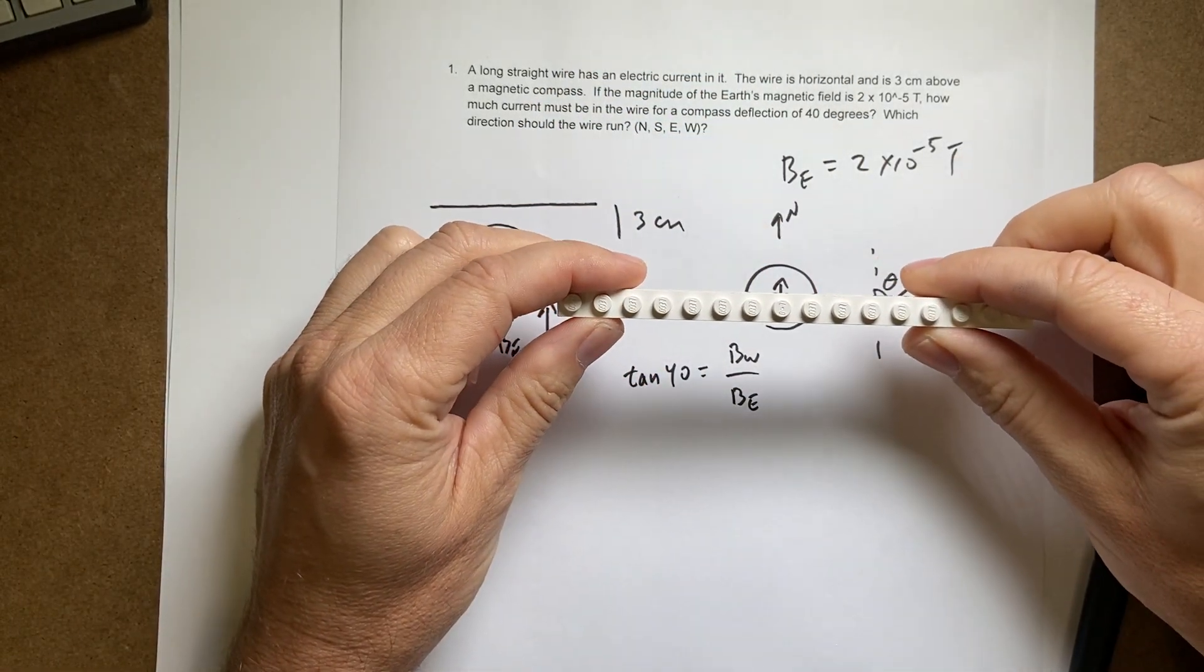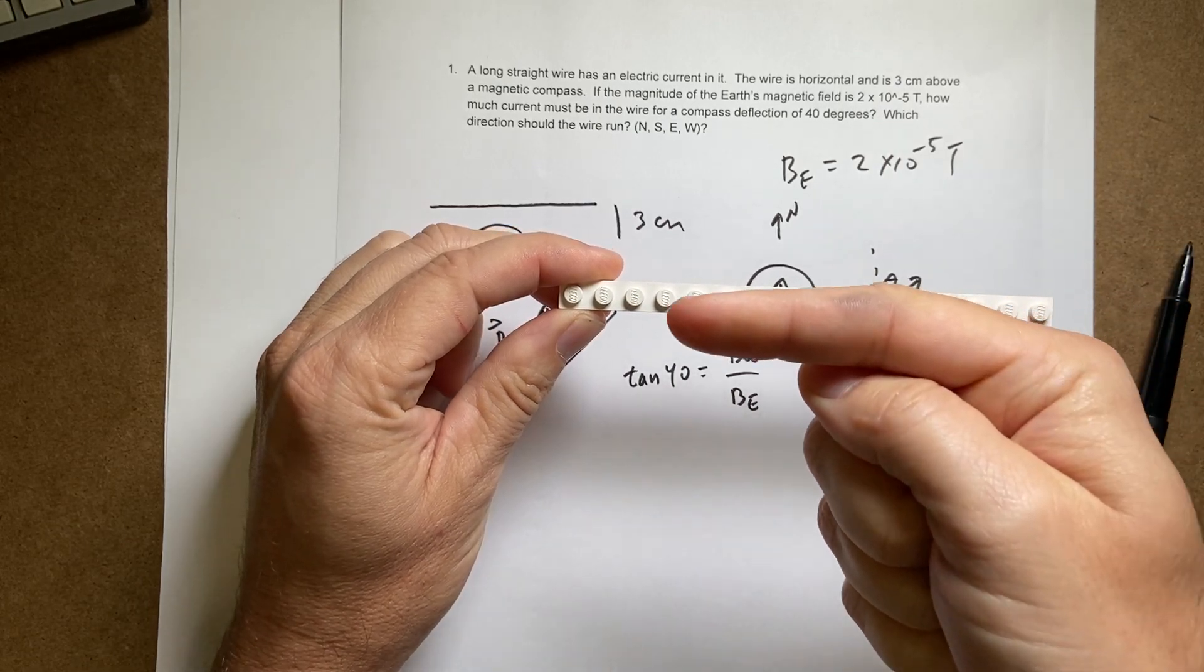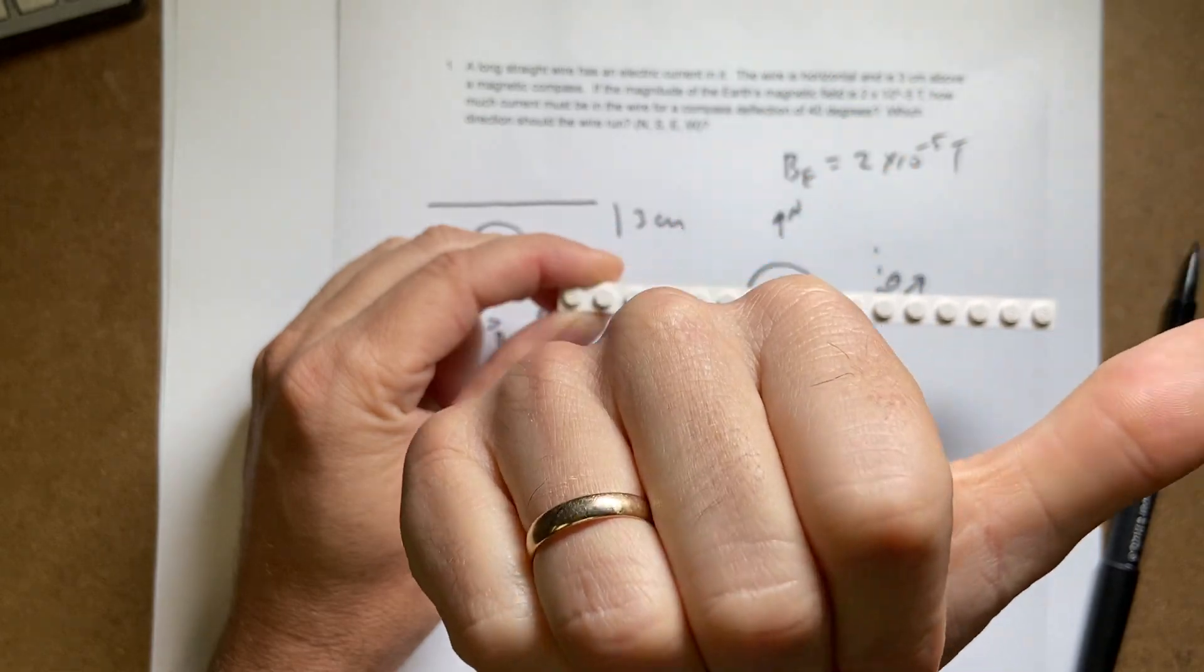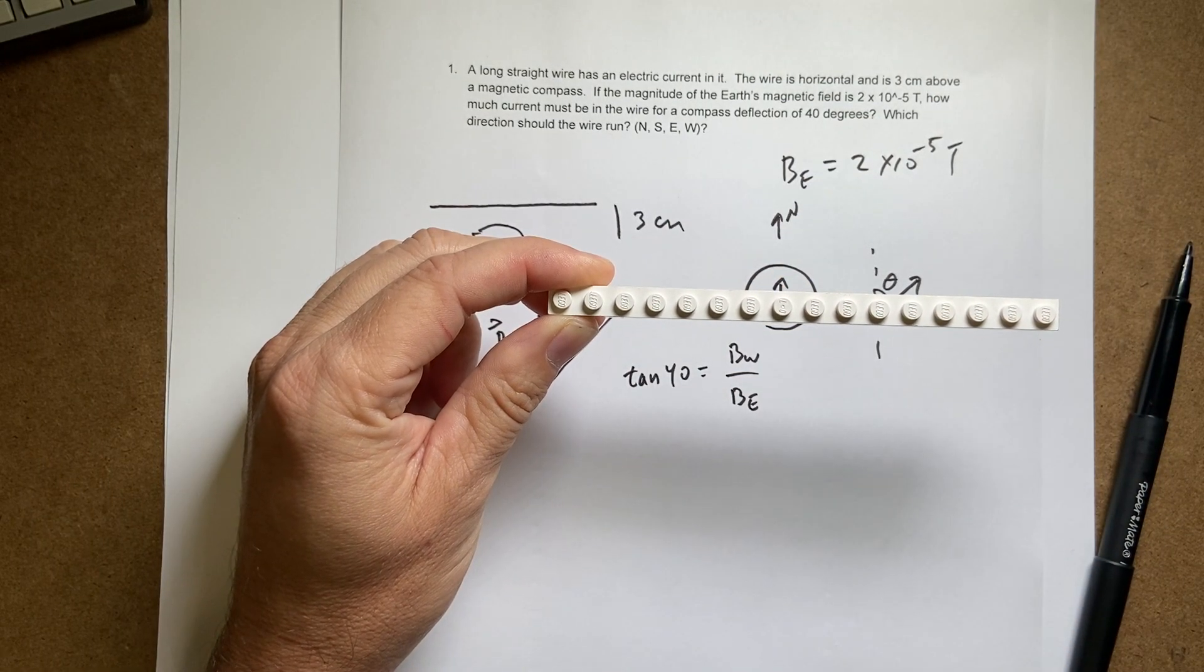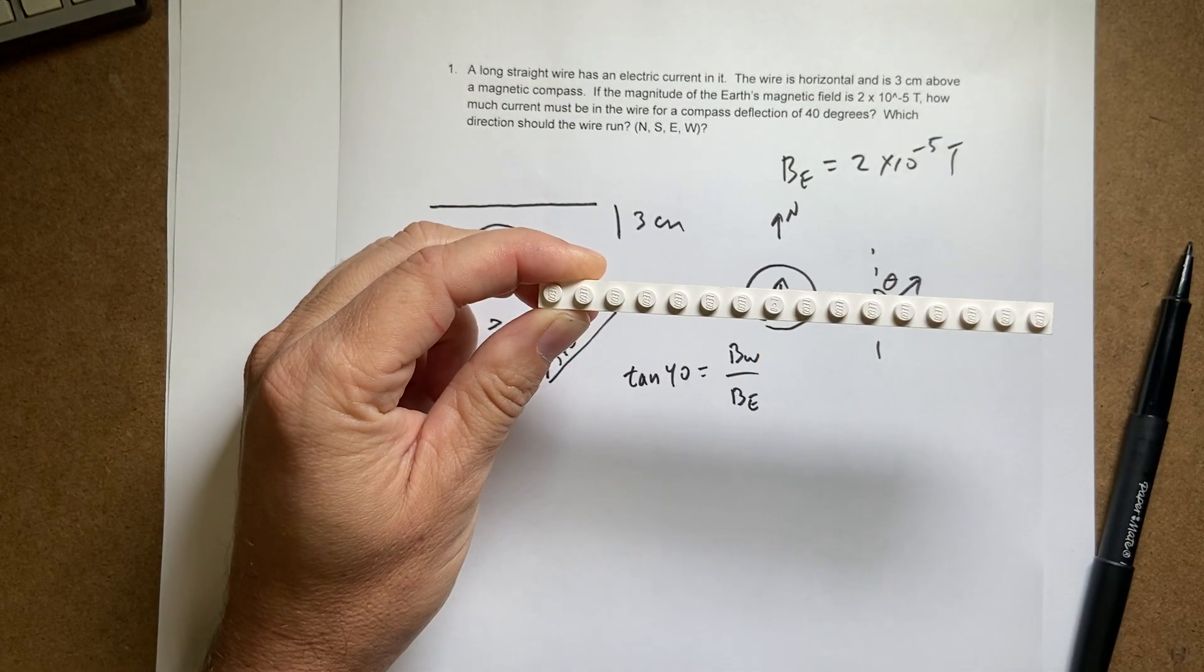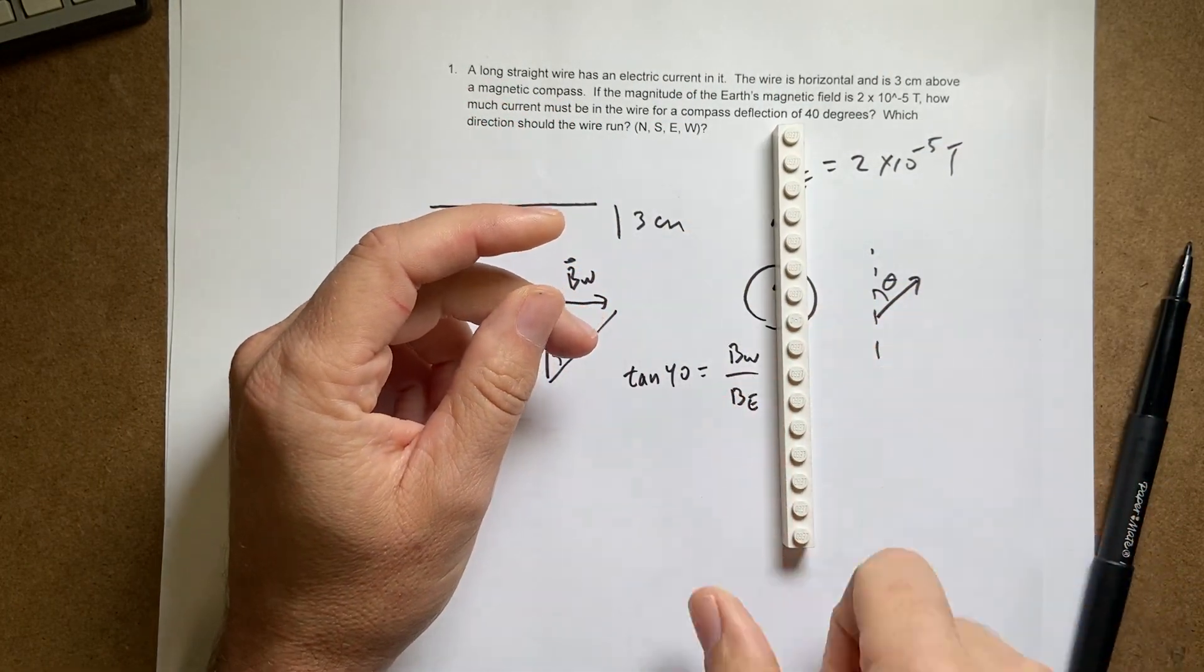Now let's just take another example. What if I have the wire like this. Now I have current going this way. Actually let's have current going this way. Then my magnetic field is going to be in the same direction of the earth's magnetic field. And there will be no deflection. Okay. And this way it would just be kind of weird. So I definitely want the wire to be going north south.